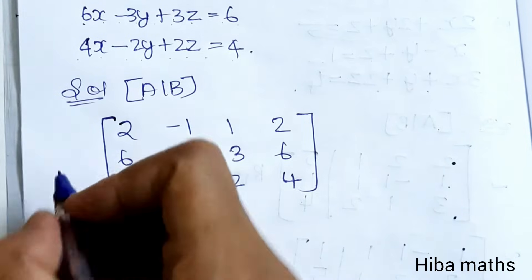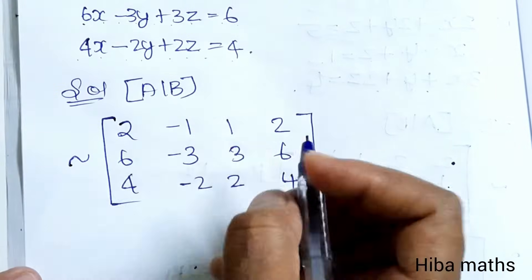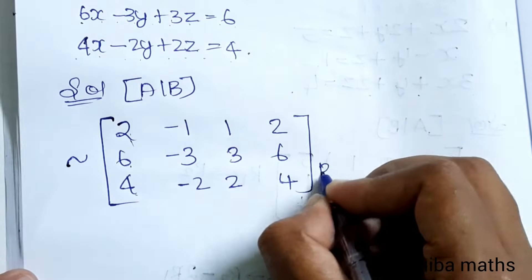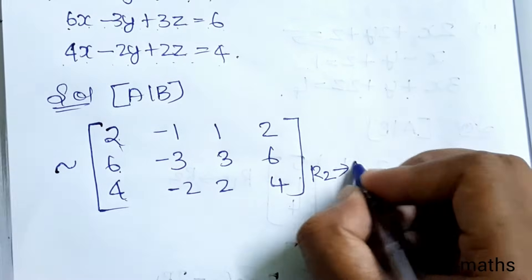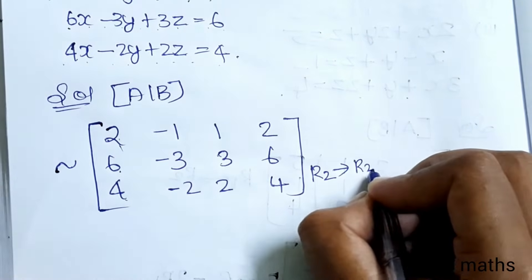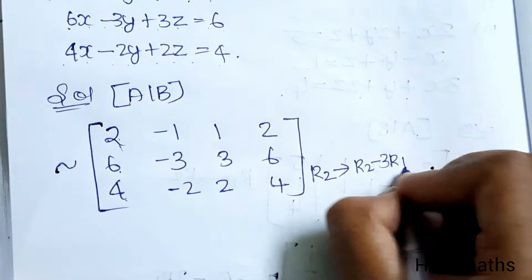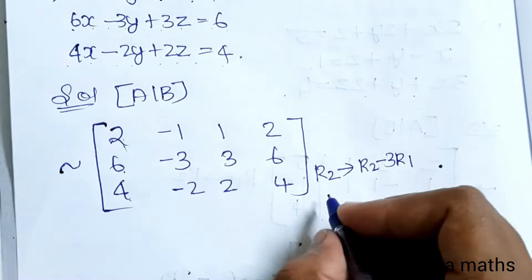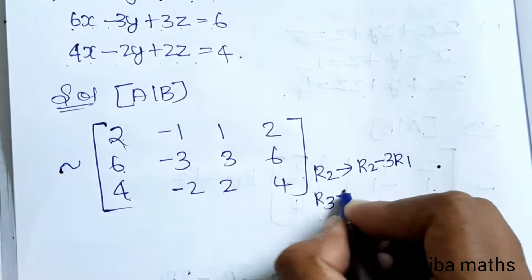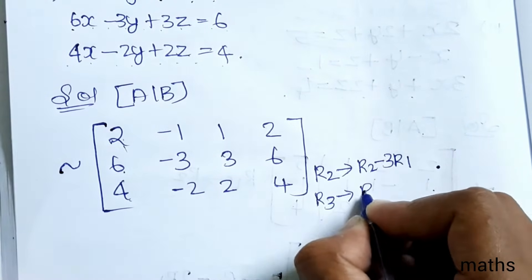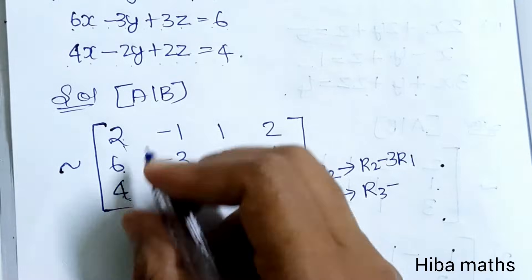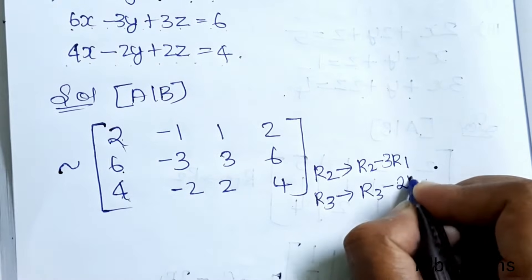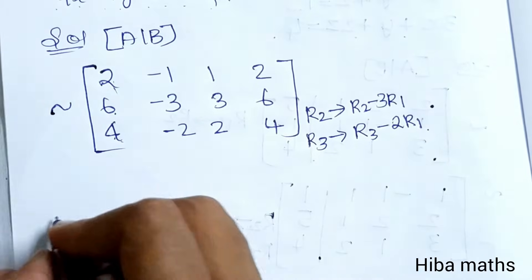The first row, first column element is 2, not 1. To get a leading 1, we apply row operations: R2 changes to R2 minus 3 times R1, and R3 changes to R3 minus 2 times R1.